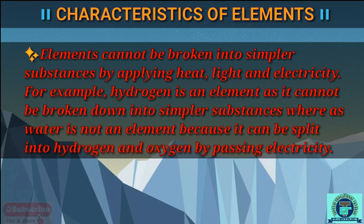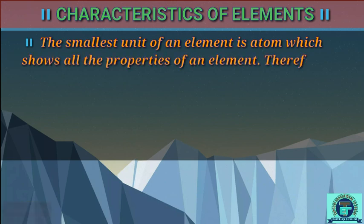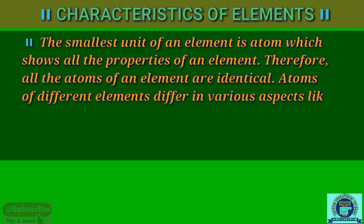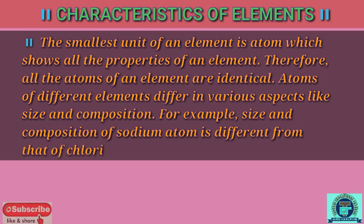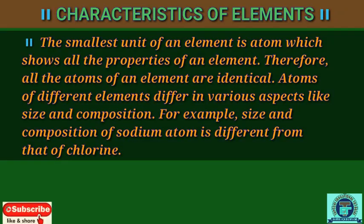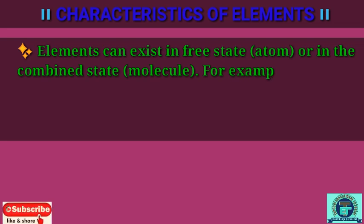Third, the smallest unit of an element is an atom, which shows all the properties of that element. Therefore all atoms of an element are identical. Atoms of different elements differ in various aspects like size and composition. For example, the size and composition of a sodium atom is different from that of chlorine. Fourth, elements can exist in free state as atoms or in the combined state as molecules.